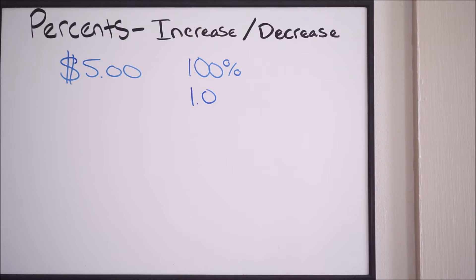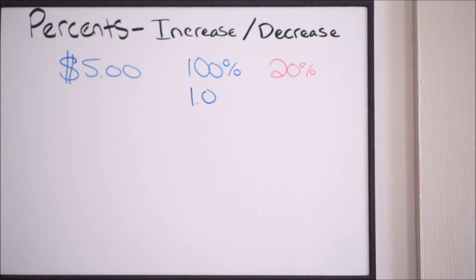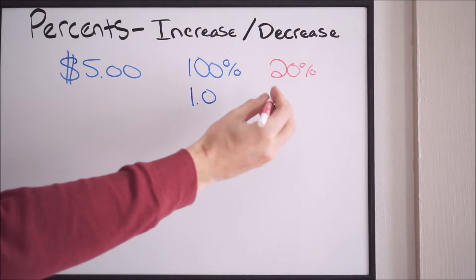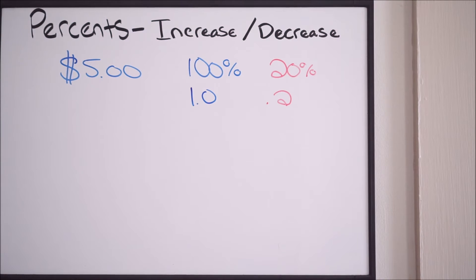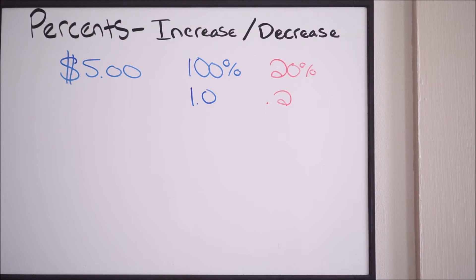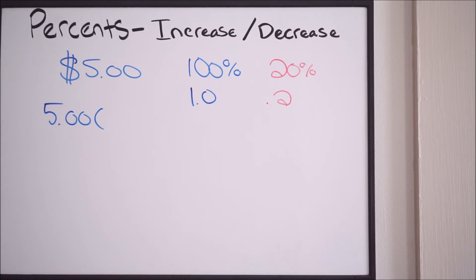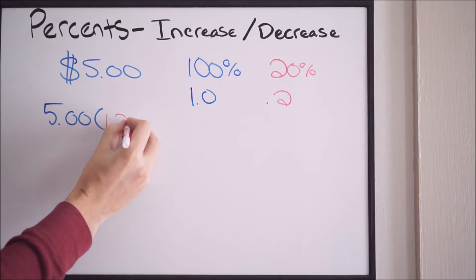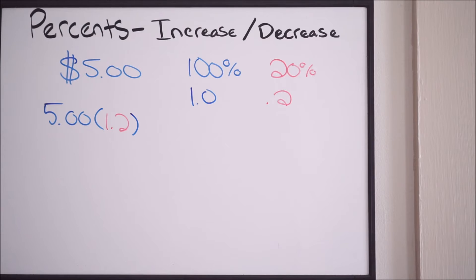If I want to know a 20% increase, all I have to do is the following. We want to increase it by 20%. Written as a decimal, moving the decimal point over two places to the left, that's going to be 0.2. So 1.0 plus 0.2 equals 1.2. So all you have to do is 5 times 1.2 — this will tell you the 20% increase or 20% markup.